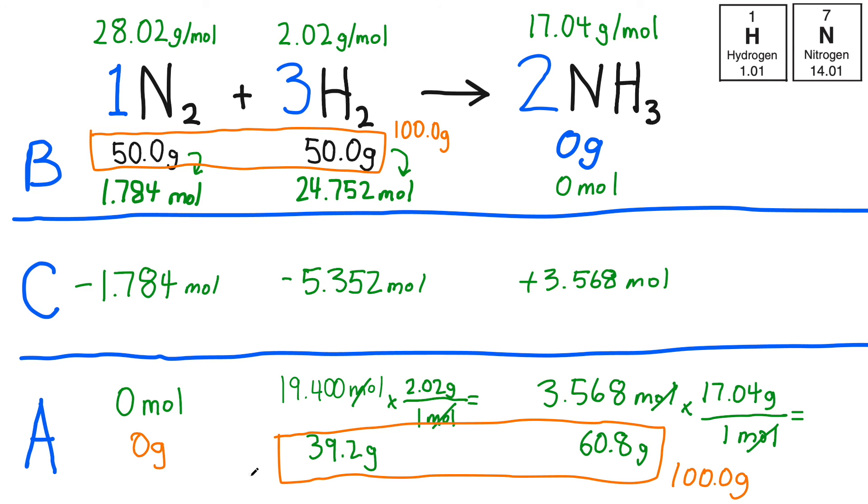Keep in mind that different stoichiometry problems might give you different units to start with. Grams is most common, but this is actually a reaction of gases. We could have been given a volume of gases reacting, say liters. We would need to convert liters to moles. That's the key. Moles is how we count up these molecules. So that first step is crucial. And when you start working with solution stoichiometry, you might be given a volume of solution and its concentration, and you use those two values to calculate how many moles are present. But if you always start by balancing the chemical equation and converting to moles, this method will always work.